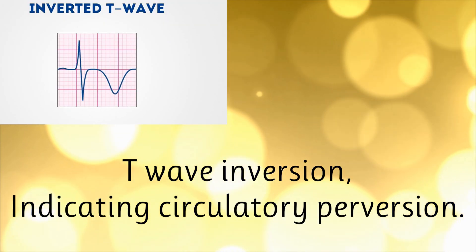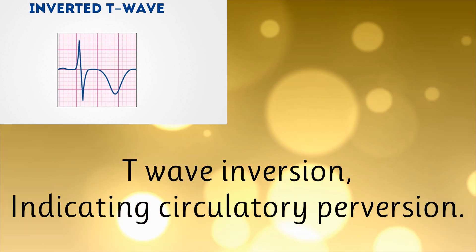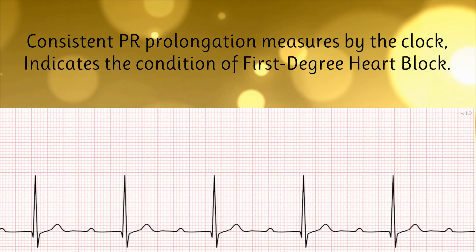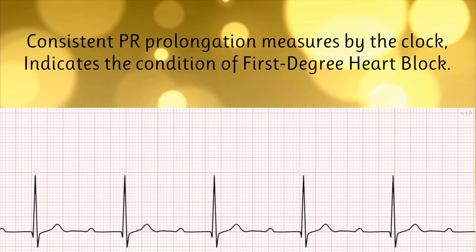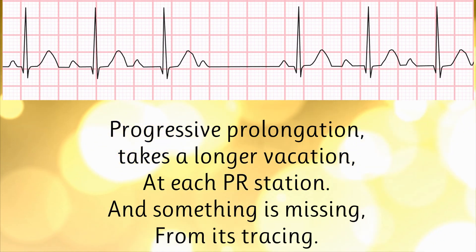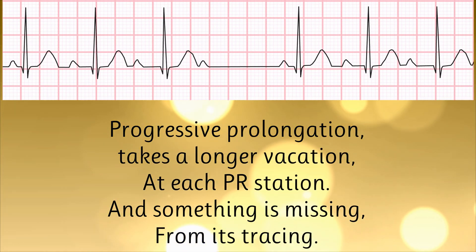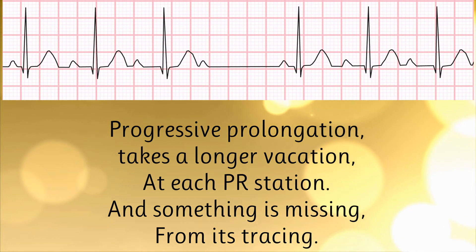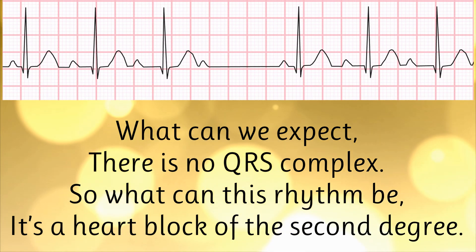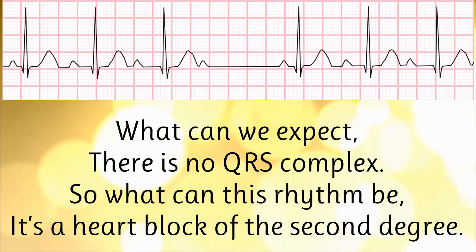T wave inversion, indicating circulatory perversion. Consistent PR prolongation, measured by the clock, indicates the condition of first-degree heart block. Progressive prolongation takes a longer vacation at each PR station, and something is missing from its tracing — there is no QRS complex. So what can this rhythm be? It's a heart block of the second degree.